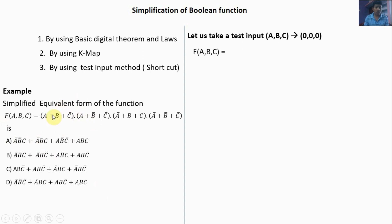Substitute A = 0, B = 0. C bar is 1. In summation, the total will be 1. Here A = 0, B bar is 1, so if any one of the inputs is 1 the output will be high — so 1. Here A bar is 1; if any one of the inputs is high the summation will be high. So A bar is high and the output will be 1.